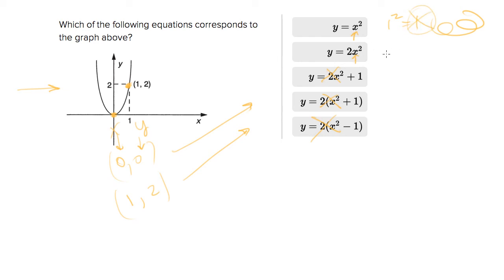If I plug in 1 for the second answer choice, which must be correct now, we get 2 times 1 squared equals 2. That's exactly what we were hoping when we plugged in 1 for x, so this is your answer.